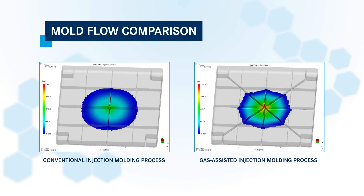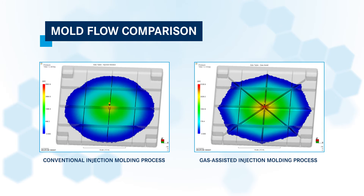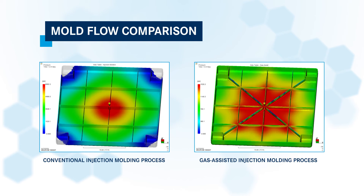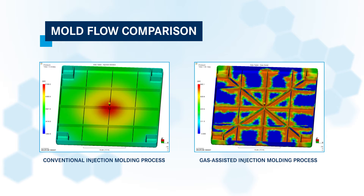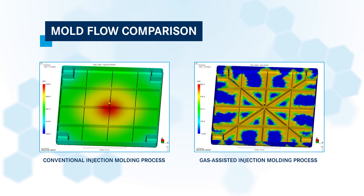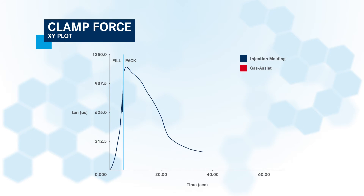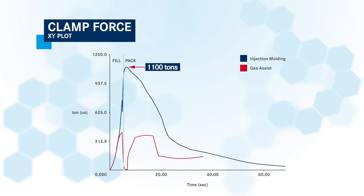This mold flow comparison shows the dramatic difference in internal cavity pressure between conventional and the GIT molded part. Due to the lower pressure differential with GIT, stress and warping are reduced. Clamping force is also reduced significantly when GIT is used. With conventional injection molding, the part needed about 1,100 tons of clamping force. Using GIT, the same part only requires around 400 tons of force.